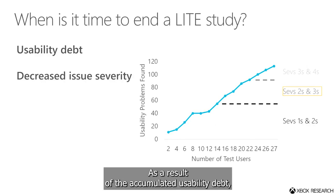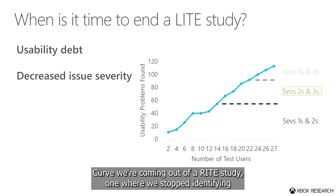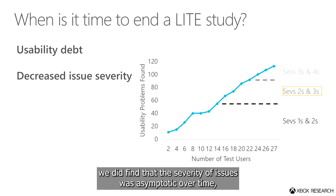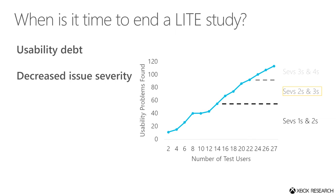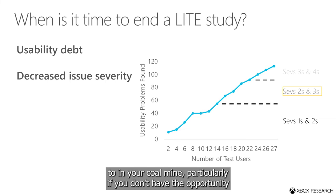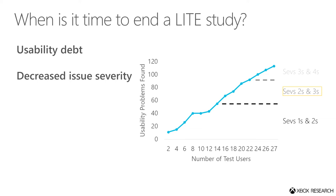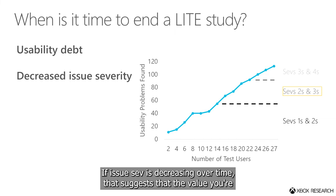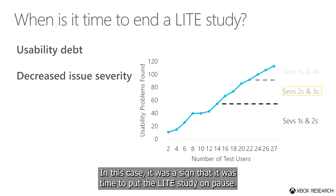As a result of the accumulated usability debt, even though we hadn't reached the traditional asymptote from the Nielsen curve or coming out of a RITE study — one where we stopped identifying new issues entirely — we did find that the severity of issues was asymptotic over time, particularly in the absence of iteration to close out previously identified issues. As such, issue severity can be a useful canary in the coal mine, particularly if you don't have the opportunity to track UR issues in shared tracking software. If issue severity is decreasing over time, that suggests the value you're getting out of your research investment is going down as well. In this case, it was a sign that it was time to put the LIGHT study on pause.